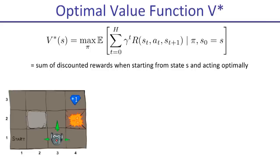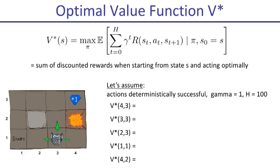Let's build some intuition. For this maze, let's make a few assumptions: actions are deterministically successful. What's the optimal value V star for square (4,3), which is the top exit square? All you can do is take the finish action, which gives you a reward of one — so optimal value is one. How about (3,3)? Also one, because no discounting and the horizon is 100, so you have plenty of time to get to that exit state. (2,3) also one. (1,1) also one. How about (4,2)? That one is negative one. For a deterministic MDP and this simple grid world, it's pretty easy to find the optimal values just by looking at it.